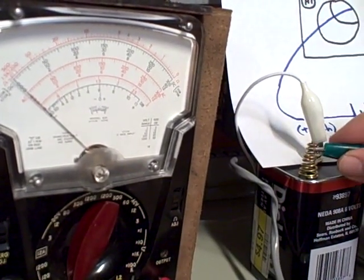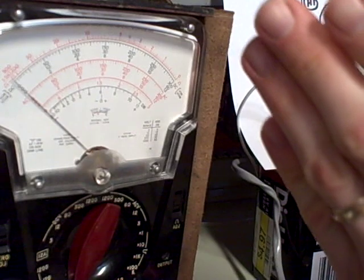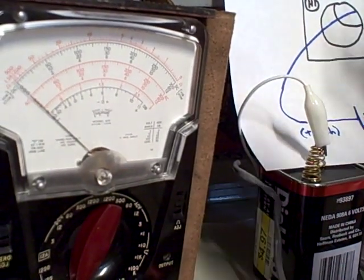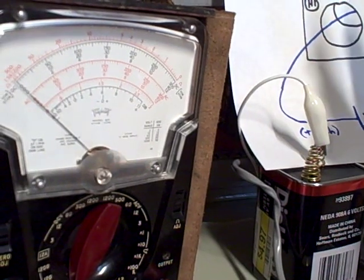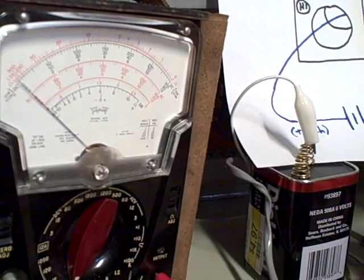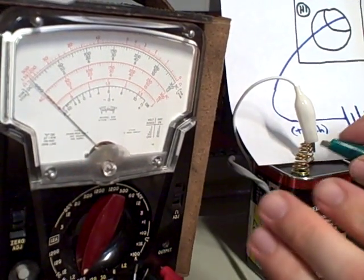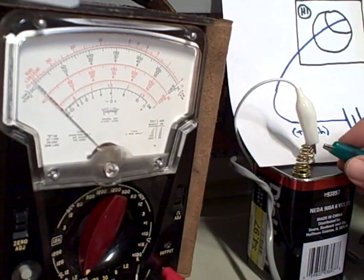When I release the connection, you see the needle jump down because now the magnetic field in the CT is collapsing. And when that happens, the polarity reverses on the coil. And so you don't really pay attention as much to what happens when I release the connection as much as when you make the connection.